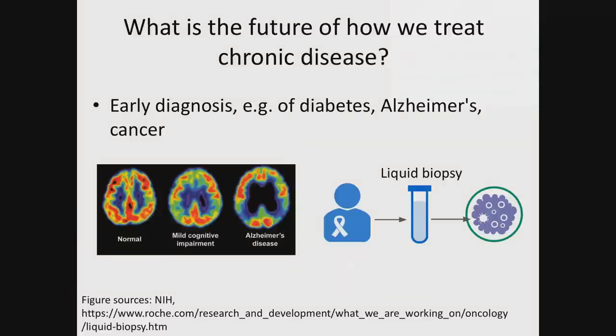Other ways to treat and manage patients with chronic disease include early diagnosis — for example, of patients with Alzheimer's disease, with some really interesting results just in the last few years. Or new modalities altogether, such as liquid biopsies that are able to do early diagnosis of cancer without having to do a biopsy of the tumor itself.